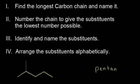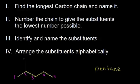The second step is to number the chain to give the substituents the lowest number possible. I could number this chain from the left or from the right. If I number it from the left, I give that substituent a number of two. If I numbered it from the right, that substituent would have a number of four. So numbering from the left is correct. I know that this is a methyl group on carbon two, so I would write 2-methylpentane — the correct IUPAC name for this dot structure.